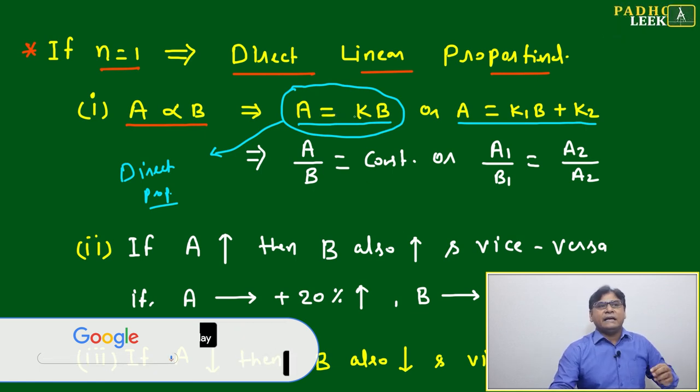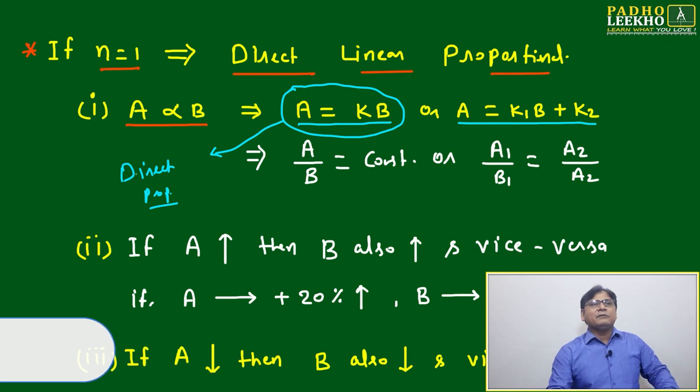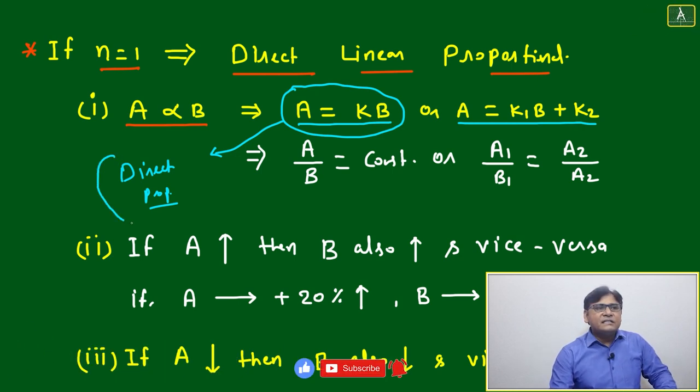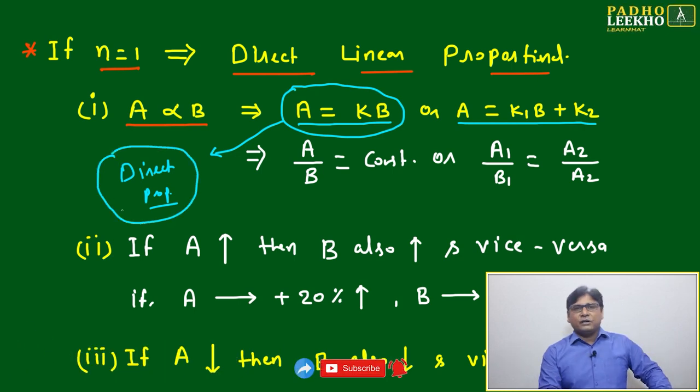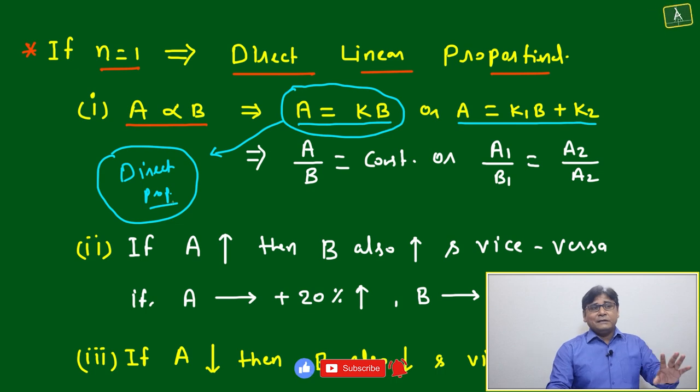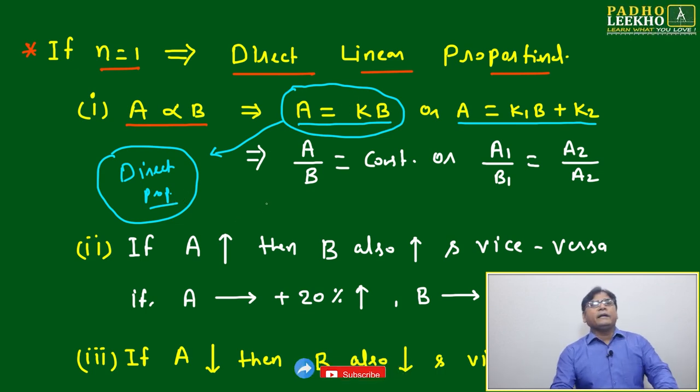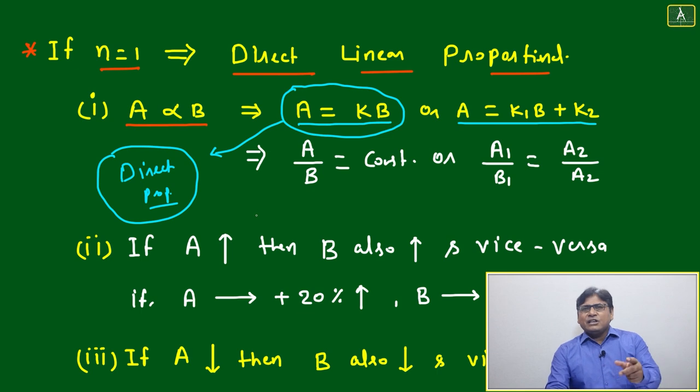No need to confuse anywhere. If it is written directly proportional, you have to assume only this one: A equal to k into B. Like school time, generally we used to check - they will give a few equations or few graphs and tell us to check which one is direct proportional, which one is not.